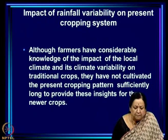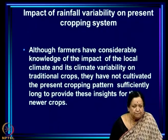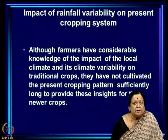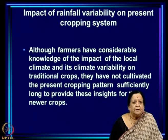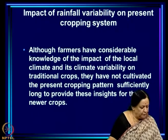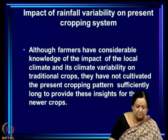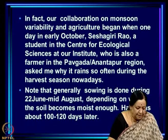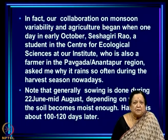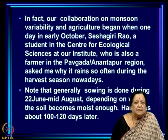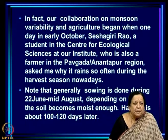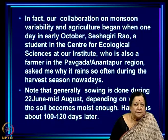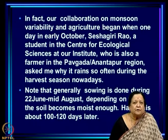Although farmers have considerable knowledge of the impact of local climate variability on traditional crops, they have not cultivated the present cropping pattern long enough to have equivalent insights for the newer crops. Our collaboration on monsoon variability in agriculture began when one day in early October, Sheshgiri Rao — then a student at the Centre for Ecological Sciences at our institute, and also a farmer in the Paugada–Anandpur region — asked me why it rains so often during the harvest season nowadays.